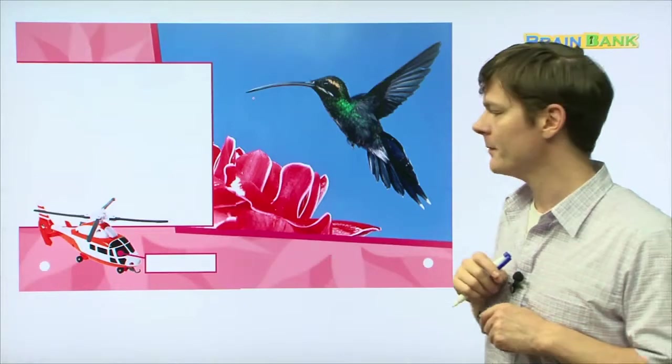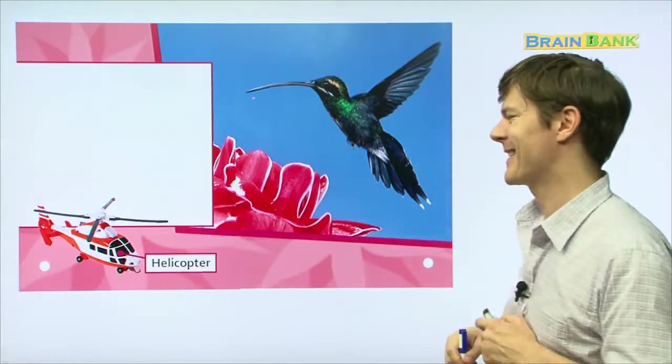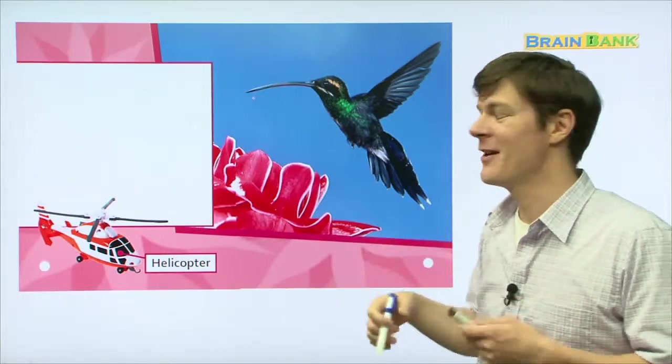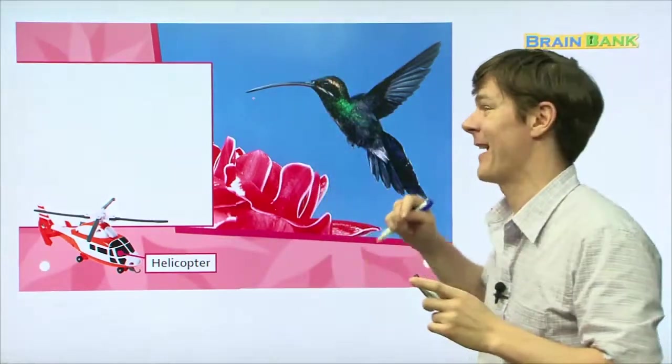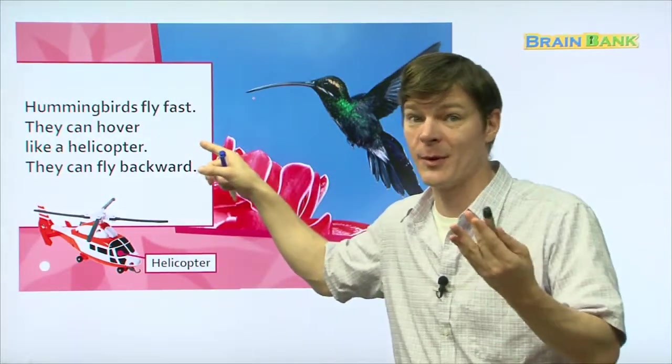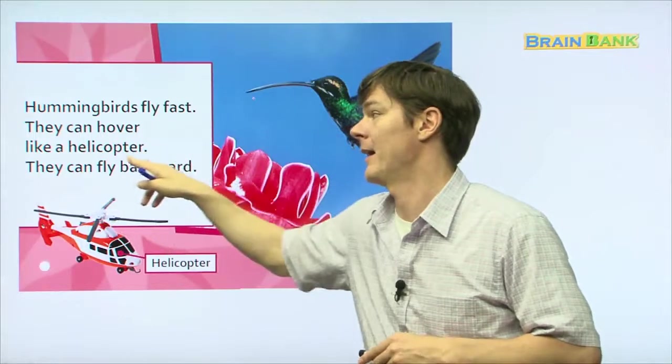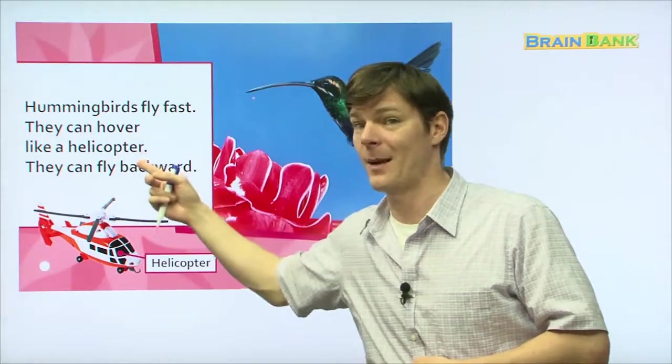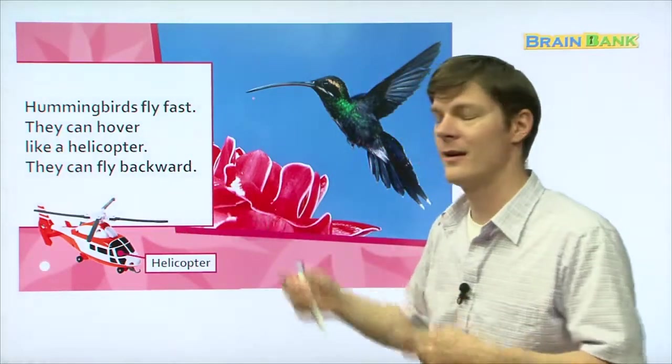Now look at this picture. Here, you can see this. What's that? A helicopter. That's right. And then here, we have another hummingbird, a very big hummingbird. So what can a helicopter do? Fly. It can fly. What do hummingbirds do? They fly. Hummingbirds fly fast. Everyone read with me. Hummingbirds fly fast. They can hover like a helicopter. Like that. Everyone read. They can hover like a helicopter. They can fly backward. They can fly backward. That's amazing.